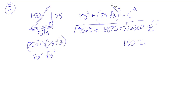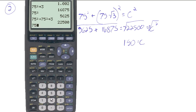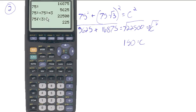It saddens me that this got missed. When you know you're supposed to square a side and you only square the square root of 3, you're not squaring the whole side. You can't be that dependent on your calculator to read your mind. You have to know exactly what you're telling your calculator to do. If you type in 75 root 3 squared without parentheses, it squares only the root 3 and then multiplies by 75. If you want it to square the whole thing, you need to use parentheses.